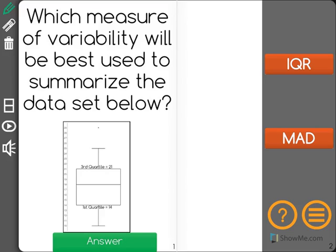Which measure of variability will be best used to summarize the data set below? IQR or MAD?